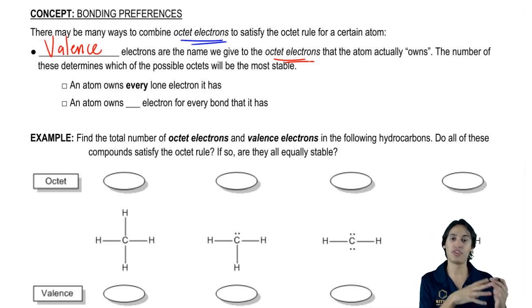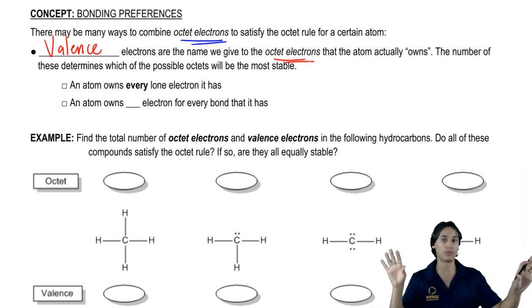The number of the valence electrons is going to determine which of the octets that you could make. If there are several versions of octets, it's going to determine which of the octets is the most stable. And this is the really basic rule.